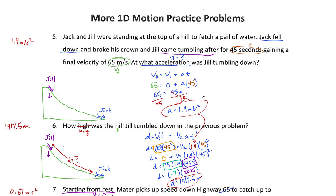So Jack and Jill standing on the top of a hill to fetch pale water — another Ms. Mardoyan problem. Jack fell down, broke his crown, and Jill came tumbling after for 45 seconds, gaining a final velocity of 65 meters per second. We want to figure out the acceleration that Jill's tumbling down at.